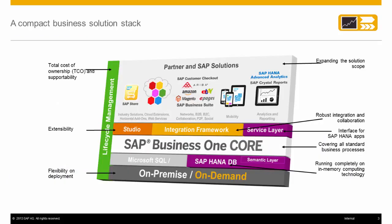SAP Business One is an all-inclusive solution. SAP Business One core functionality is available both on-premise or cloud-based. Regardless of how SAP Business One is implemented, you have the same integration options available. We will discuss the extensibility layer from the diagram consisting of the SAP Business One SDK in-studio, the integration framework, and the service layer.